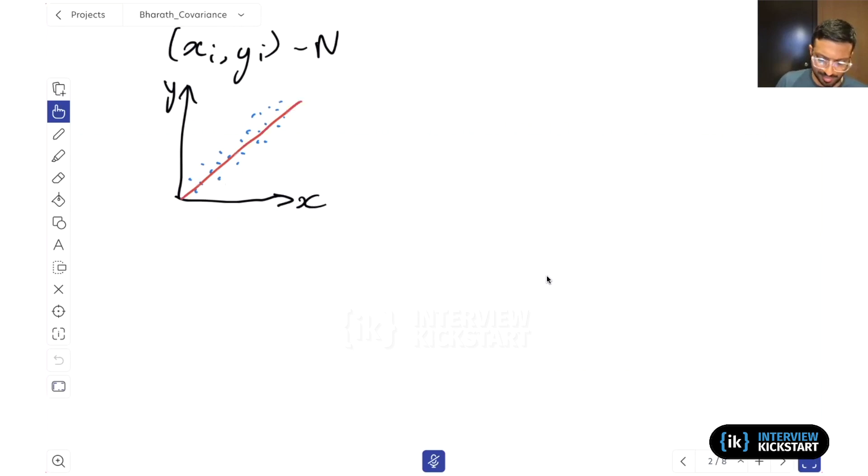But this doesn't necessarily have to be the case. We can look at a different example potentially where we have the data looking like this. So for low values of x, we actually have high values of y. And as the value of x increases, we see that the value of y actually comes down. So in this case, we have a downward relationship like this.